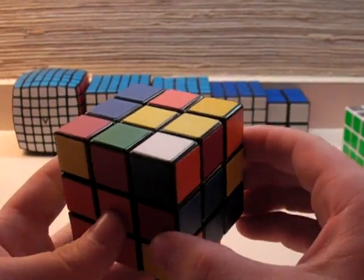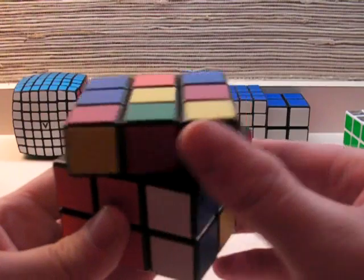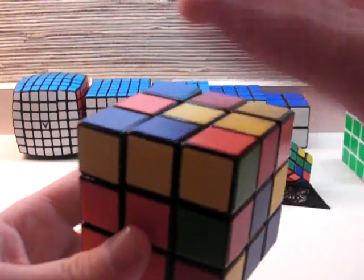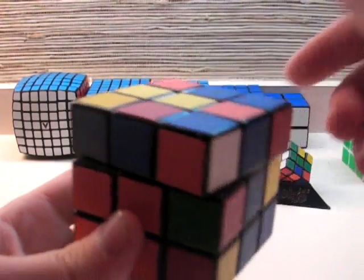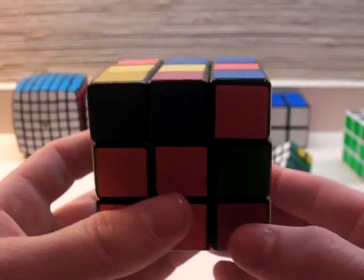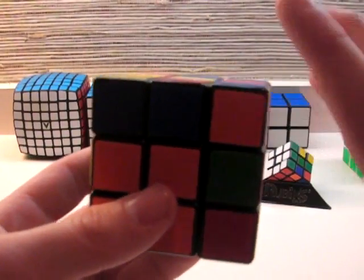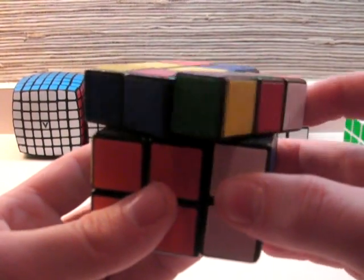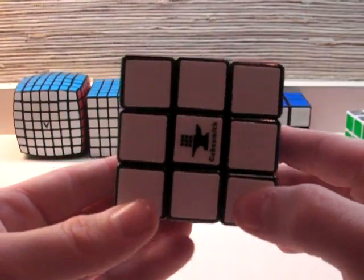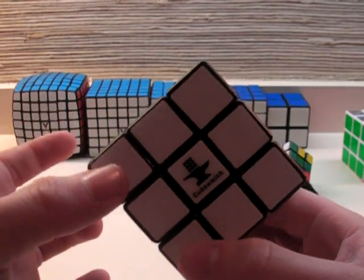And perform the correct case that you have in order to get it into its correct spot. So with white on the top, you do R, U prime, R prime. Now your piece is back here, so you bring it again on top of where it goes. And then white is on the right side, so you hold it in the top right, like this. And you do R, U, R prime. And now what you have done is you have solved the whole first layer.